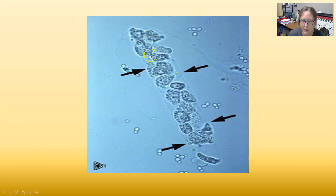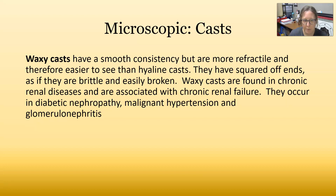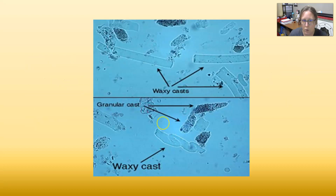This is a cellular cast — you can see the outline of the cast and the cells stuck inside it. Waxy casts have a smooth consistency but are more refractile and therefore easier to see than hyaline casts. They have squared-off ends, whereas hyaline casts tend to have rounded ends, as if they were brittle or easily broken. Waxy casts are found in chronic renal diseases and are associated with diabetic nephropathy, malignant hypertension, and chronic renal failure. These are what waxy casts look like — the straighter edges make them more prominent and easier to see. That wraps up our microscopic topic video.